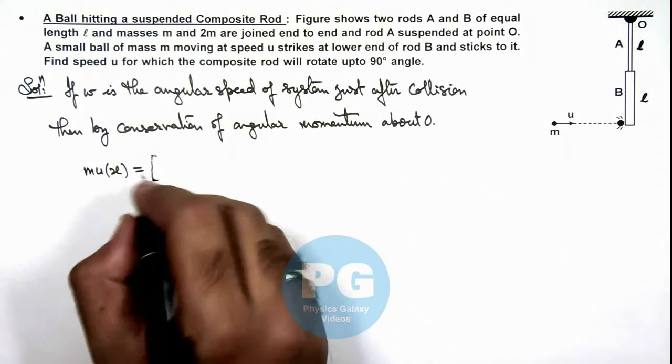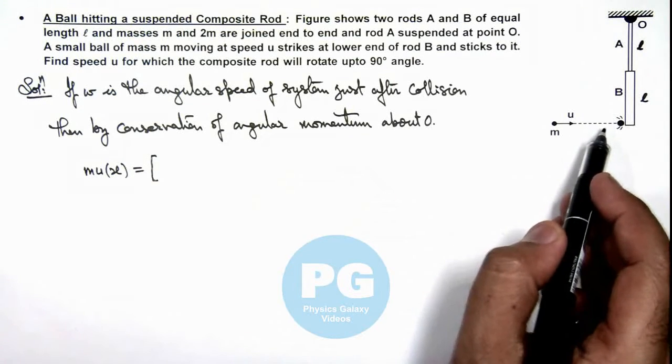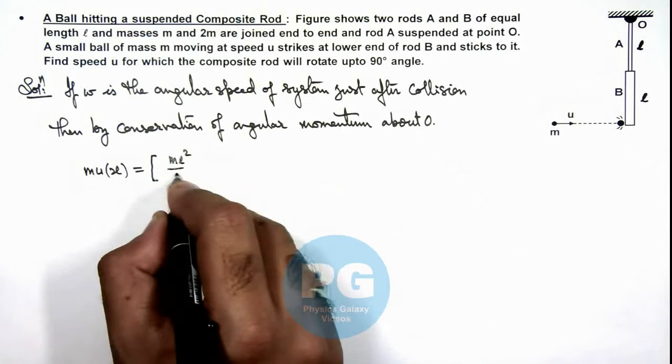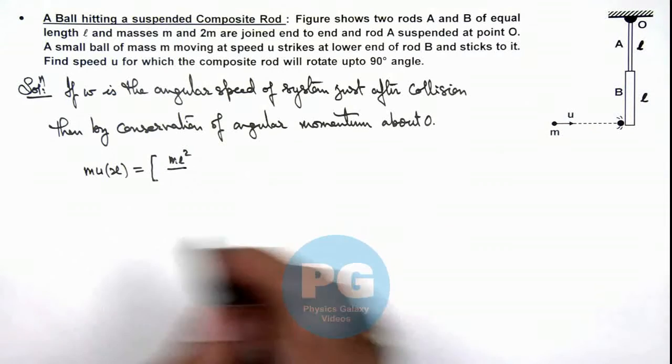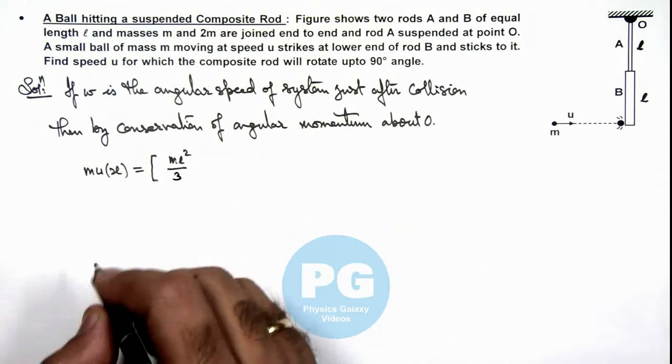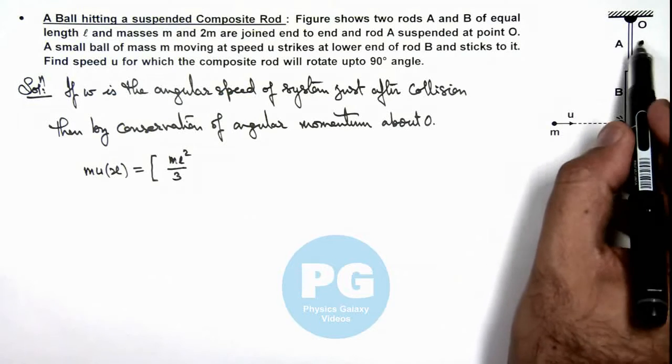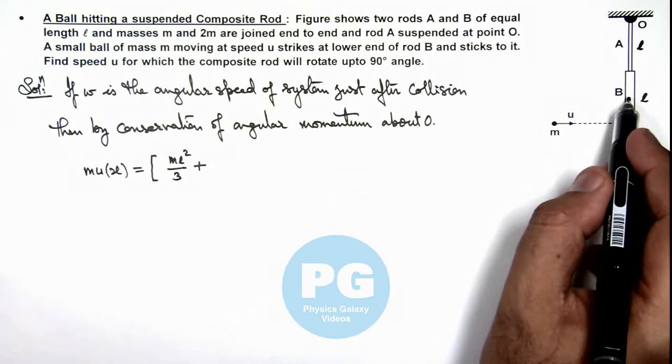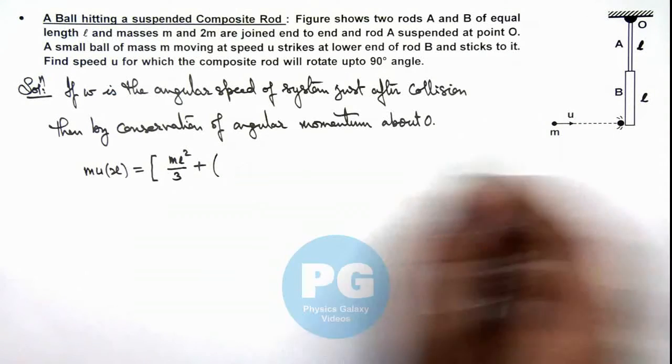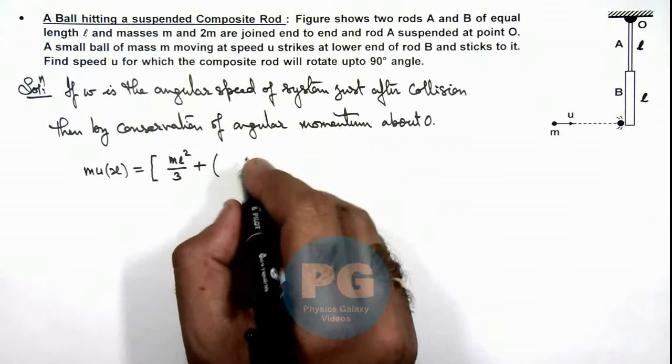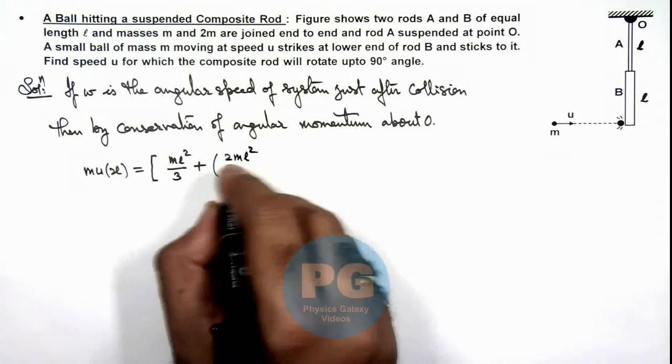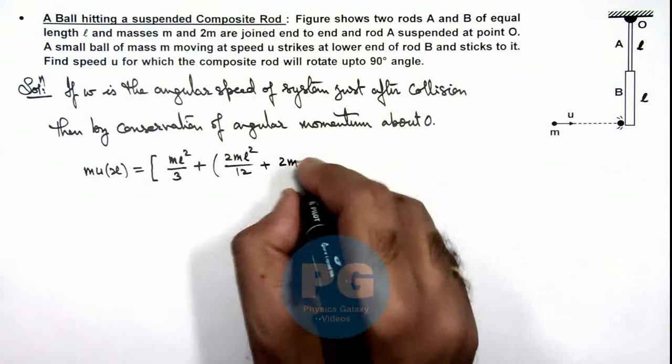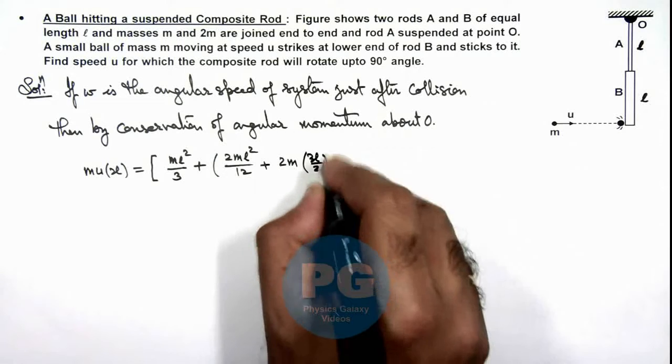If we calculate the moment of inertia of the system, the moment of inertia of rod A is ml²/12 plus ml²/4, so this is ml²/3, the moment of inertia of a rod of length l about its end point. For rod B we use parallel axis theorem which gives 2ml²/12 plus 2m multiplied by 3l/2 whole square.